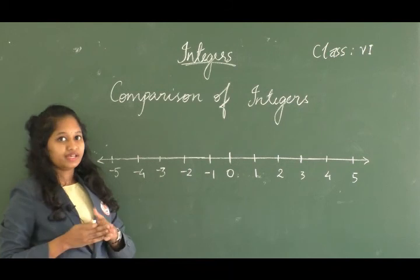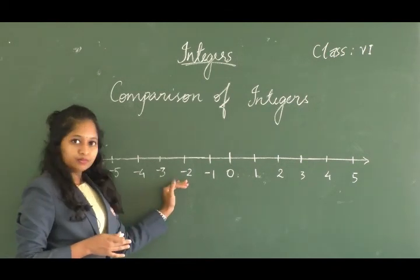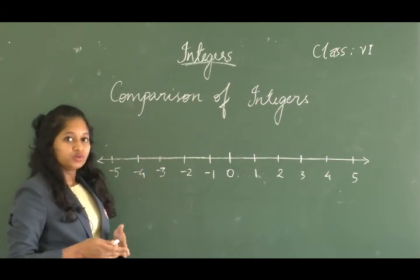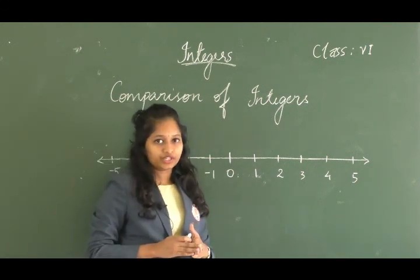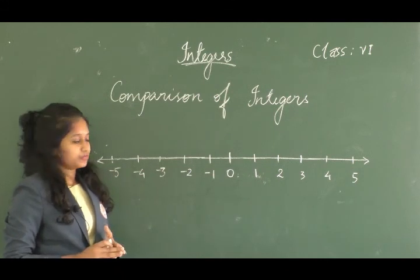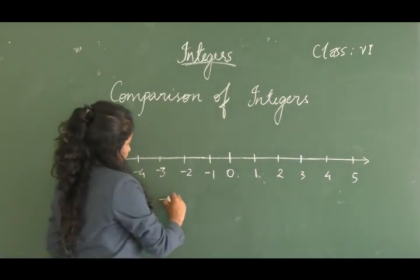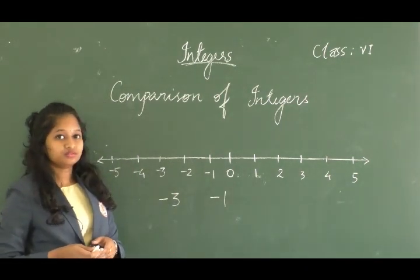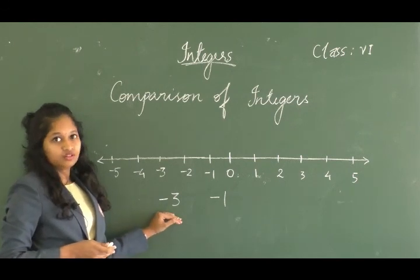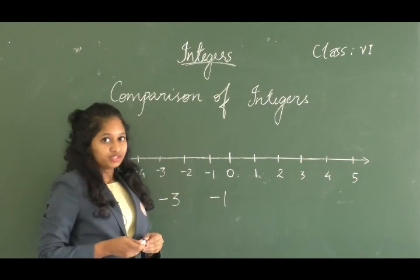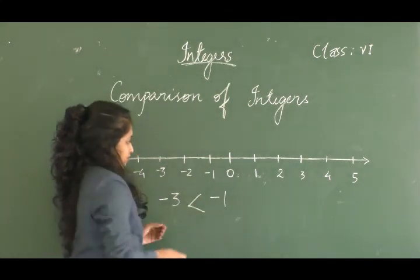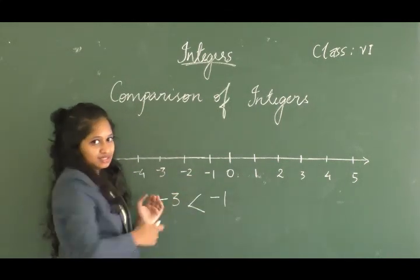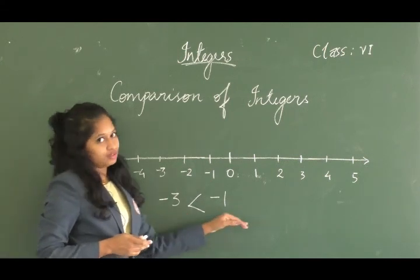In the case of negative numbers, the number with the smaller numerical value is greater than the one with a greater numerical value. For example, between minus 3 and minus 1, minus 1 is greater because minus 1 lies to the right of minus 3 on the number line. So minus 3 is less than minus 1.